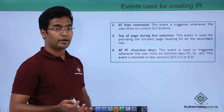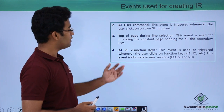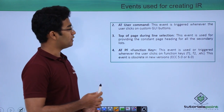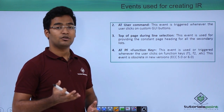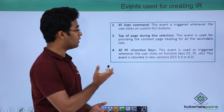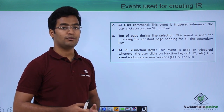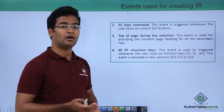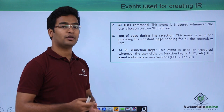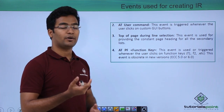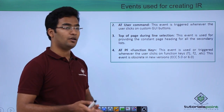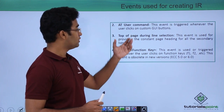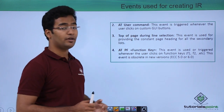The second event is AT USER COMMAND. This event is triggered whenever the user clicks on a particular custom GUI button. For example, in the output screen, if we have a particular GUI button that we have created, on the click of that particular button, this event is triggered.